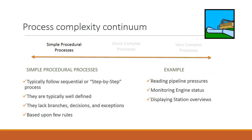Simple processes are those at the far left of the continuum. These processes typically follow a sequential or step-by-step process. They are usually well-defined and lack branches, decisions, and exceptions. Typically, they are based upon few rules. Examples of this include reading pipeline pressures or monitoring engine statuses used to push gas throughout the pipeline.